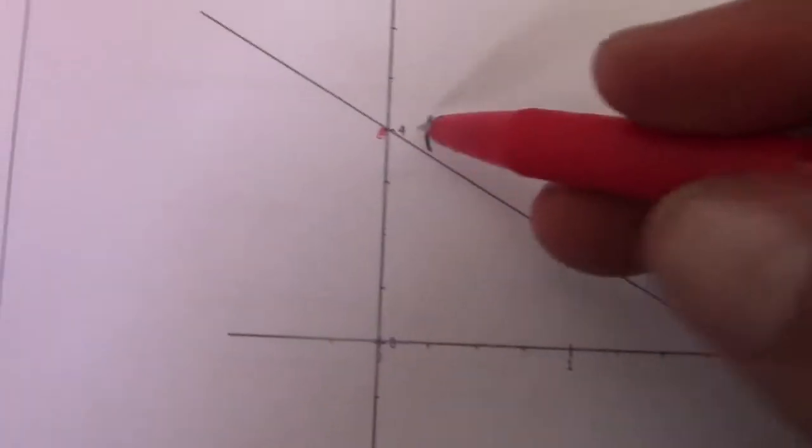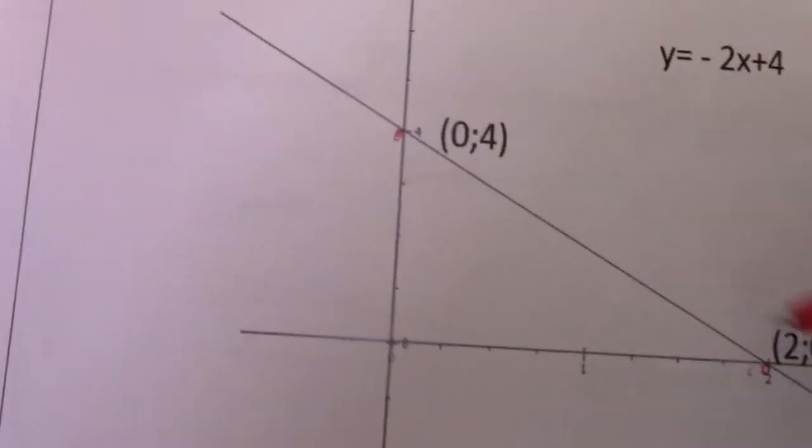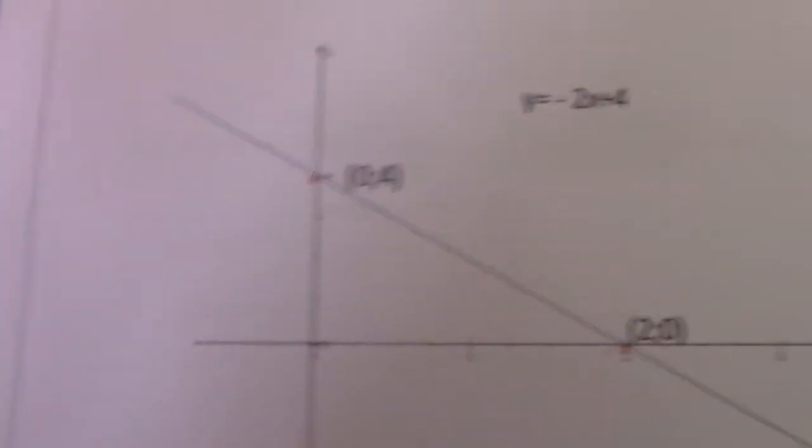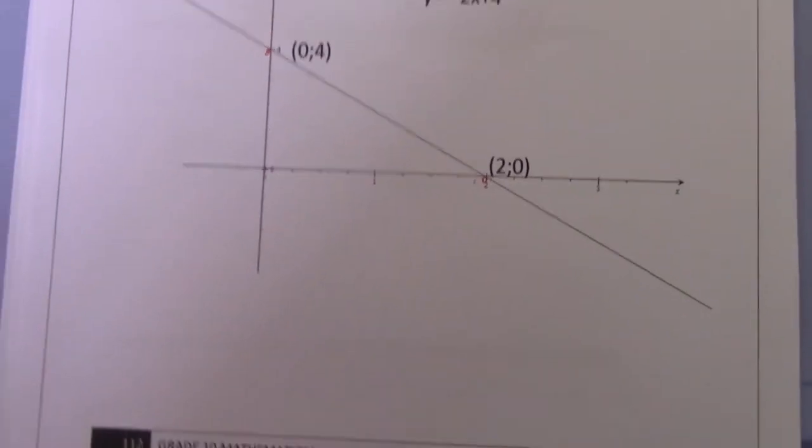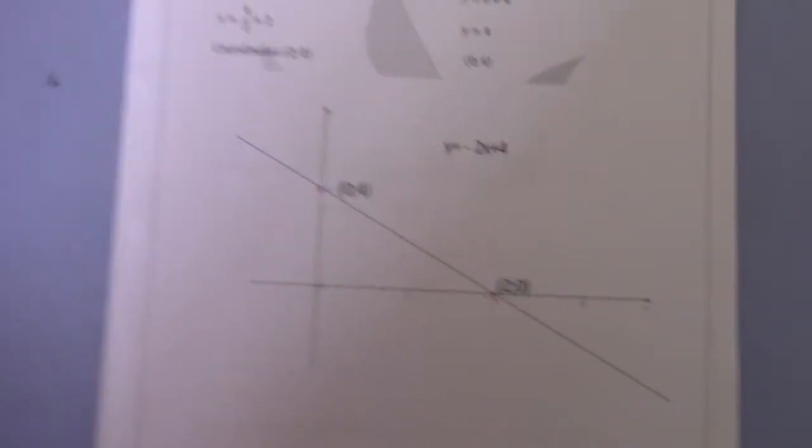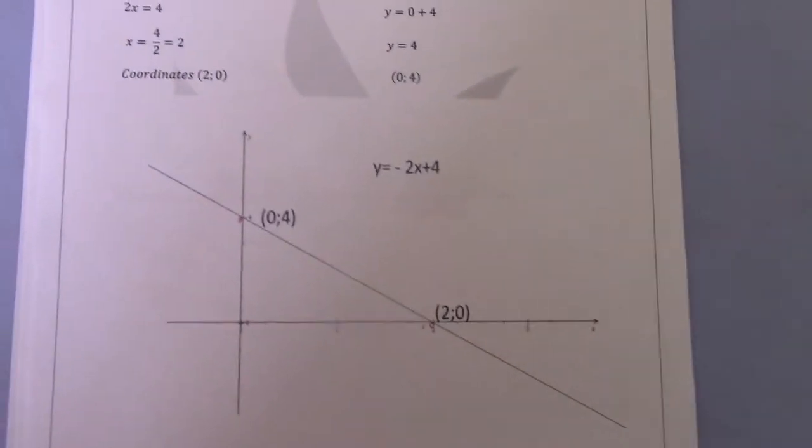So once I have those two points, I draw a straight line through it and I end up with my straight line graph of y equal minus 2x plus 4. That's the dual intercept method, Grade 9 revision, practice.